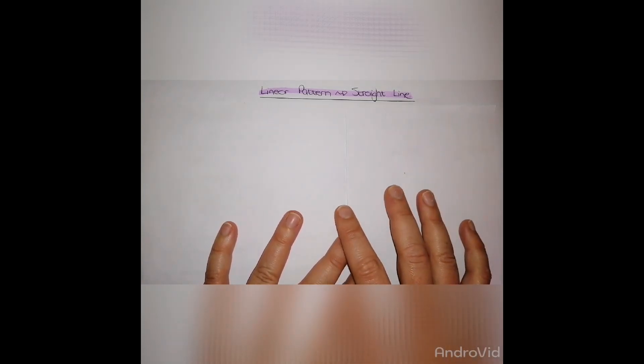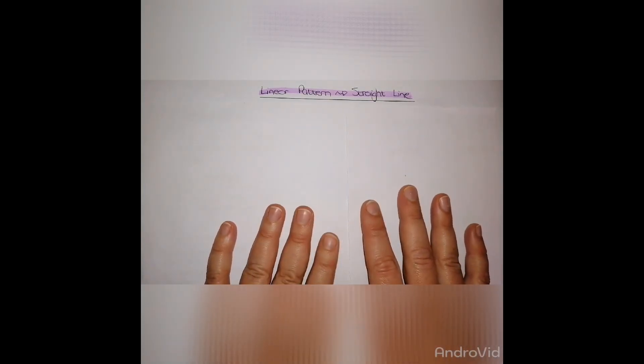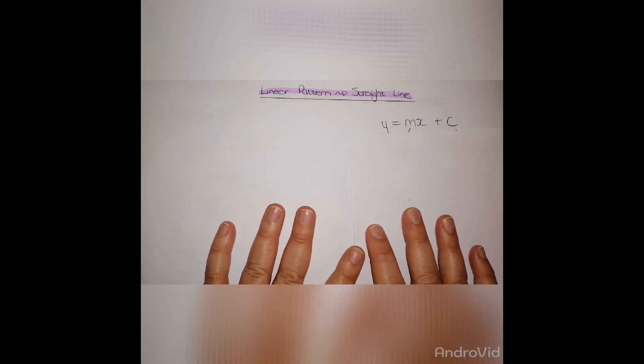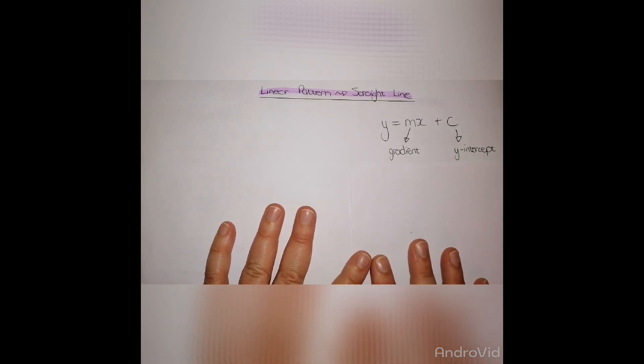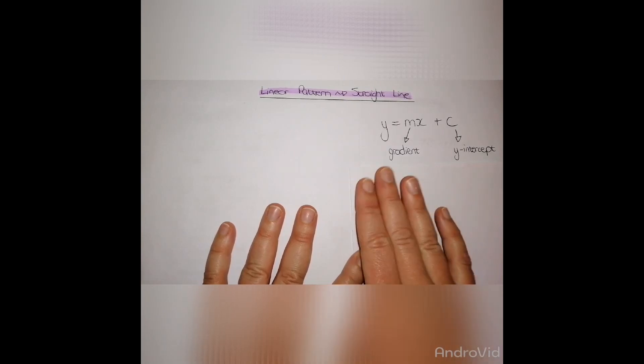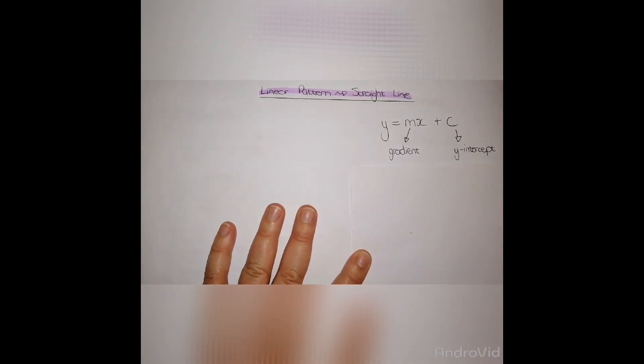Going from a linear pattern to drawing a straight line, the first thing we need to find is what the formula looks like. The basic formula for a straight line is y equals mx plus c, where m is your gradient and c is your y-intercept.